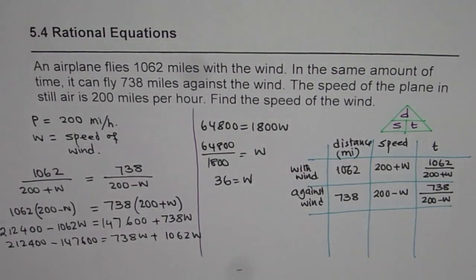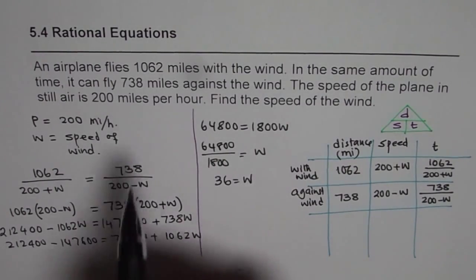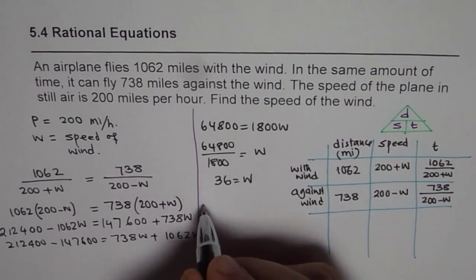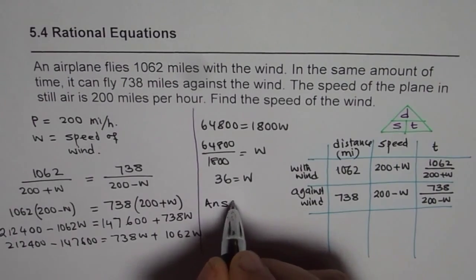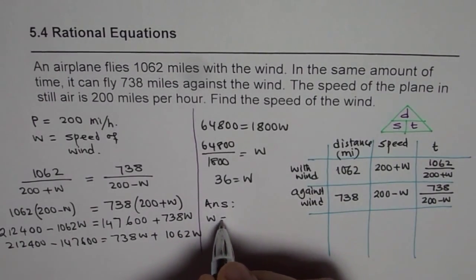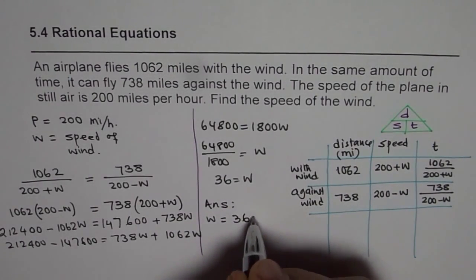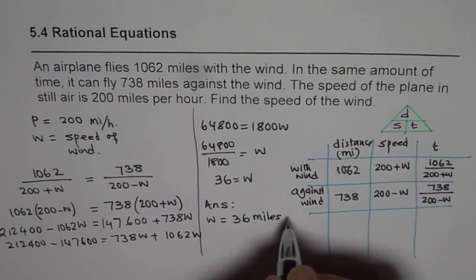So we get the wind velocity which is 36. The units are miles per hour. So we can write down our answer as wind velocity is 36 miles per hour.